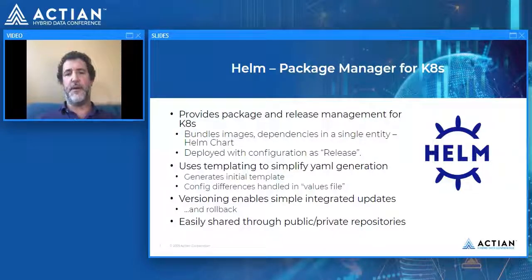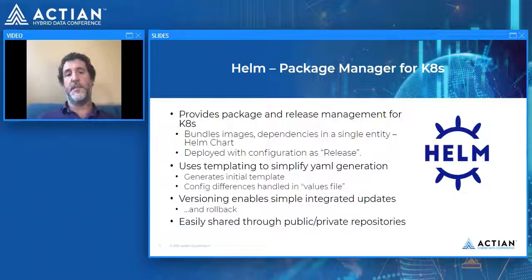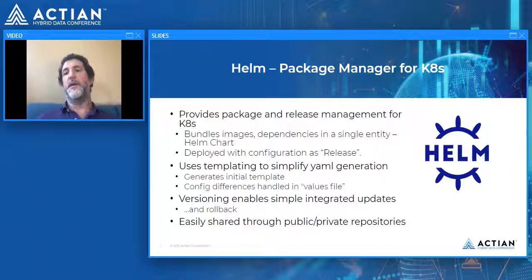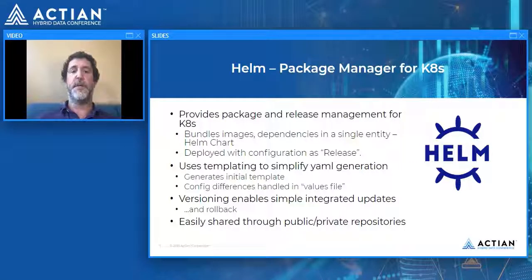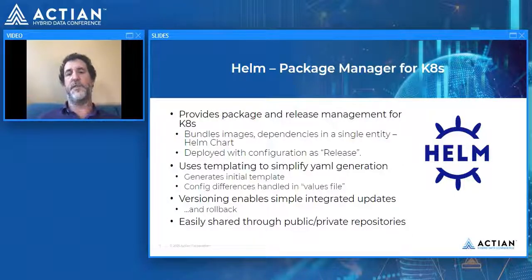One way to manage that complexity is by using Helm. Helm is essentially a package manager for Kubernetes. It provides a way to bundle images, dependencies, and other prerequisites in a single entity known as a Helm chart. The Helm chart is then deployed with a deployment-specific set of configuration values, and those two together are known as a release. Helm uses templating to simplify the generation of the underlying YAML files and will even generate a shell Helm chart for you automatically.